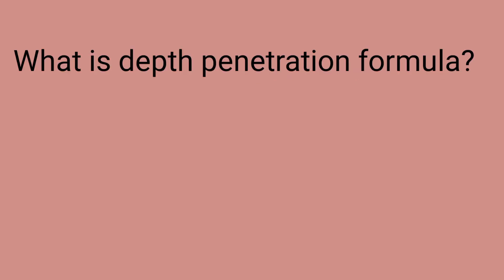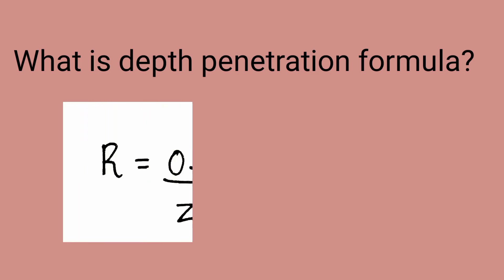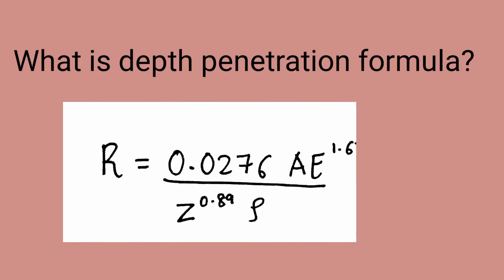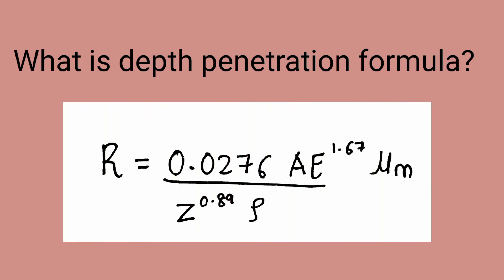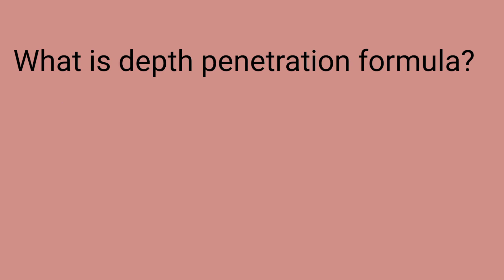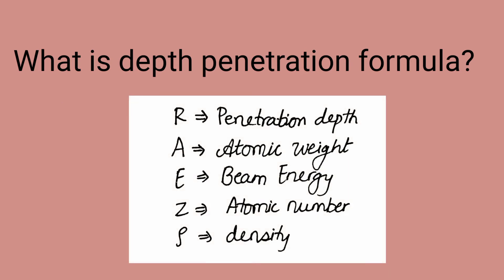What is the depth penetration formula? The formula is: R = 0.0276 × A × E^1.67 / (Z^0.89 × ρ), where R is the penetration depth, A is the atomic weight, E is the beam energy, Z is the atomic number, and ρ (rho) is the density.